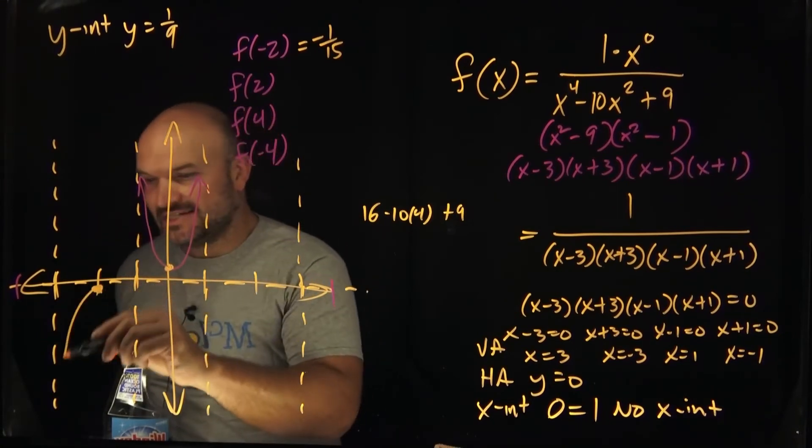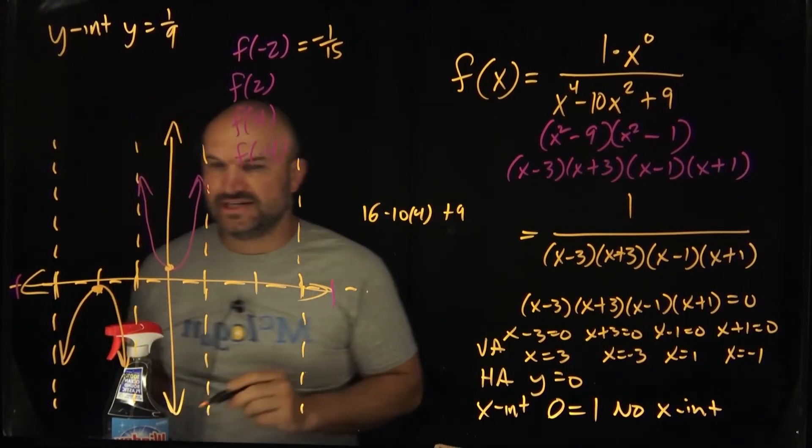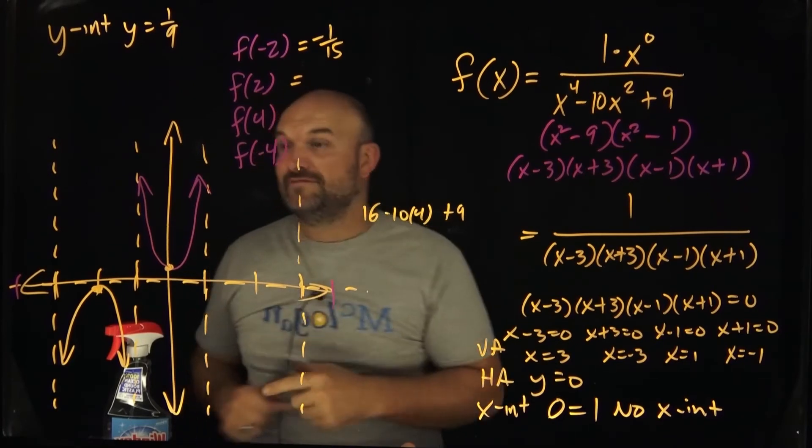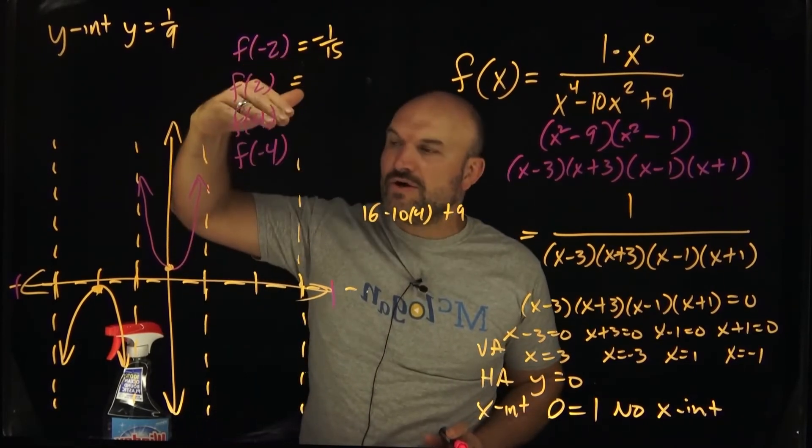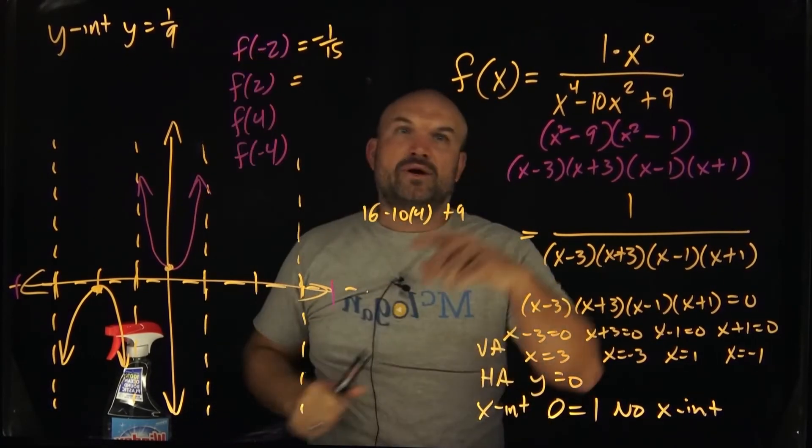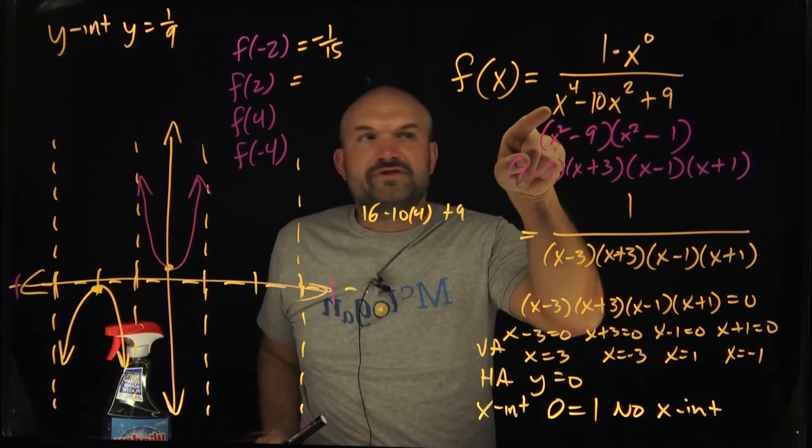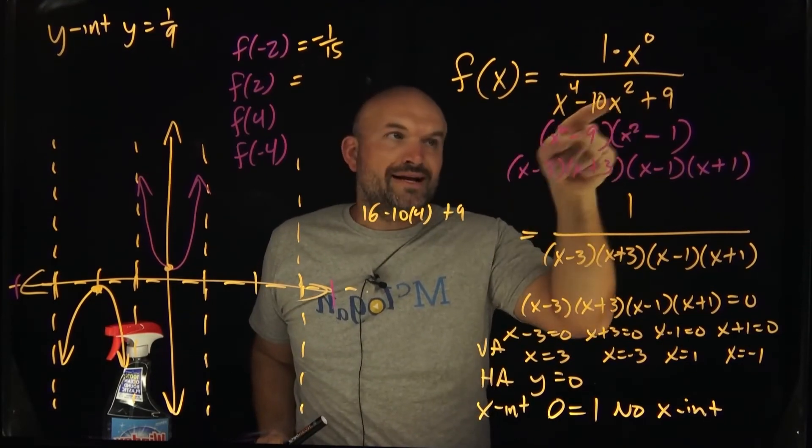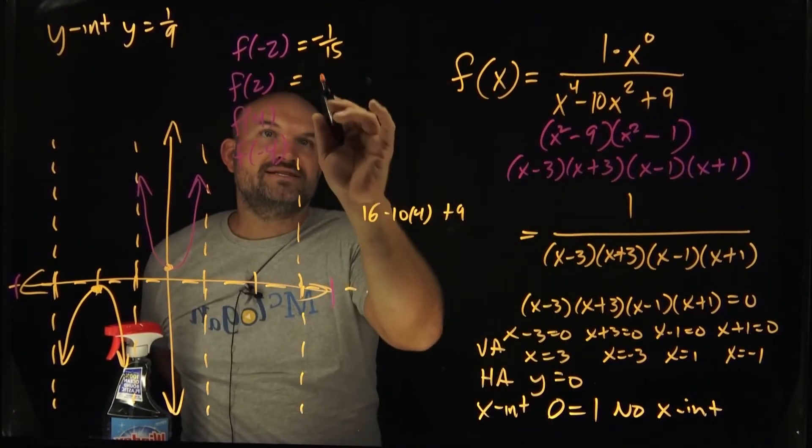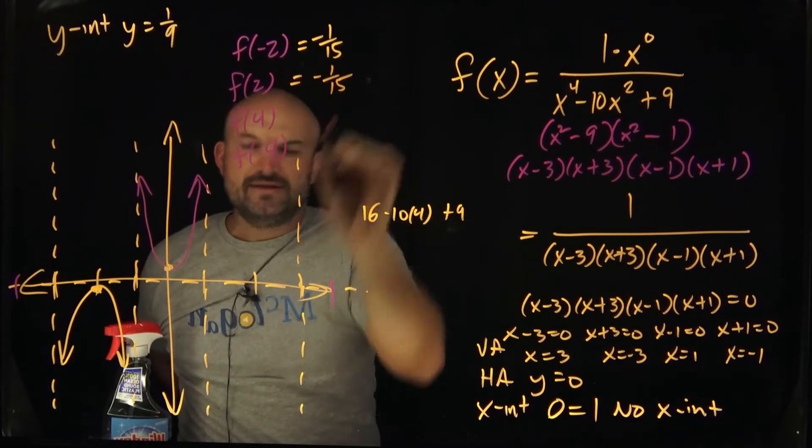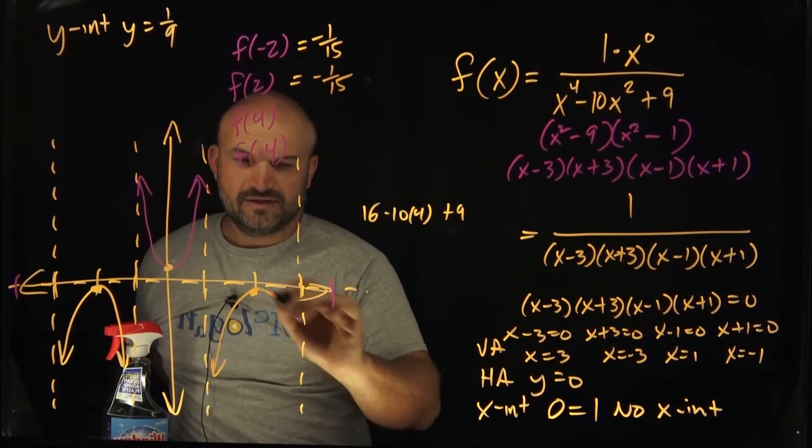Now, again, remember guys, it has to approach these asymptotes, right? So it's going to look like this. All right, so now let's check out f of two. And if you recognize for f of two, that's going to be the exact same value with negative one over 15, because it doesn't matter if you take a negative two or a positive two, and you're squaring it, you're going to get the exact same value. So therefore, in this case, that's going to be a negative one over 15. So therefore, this graph is going to look something like this.